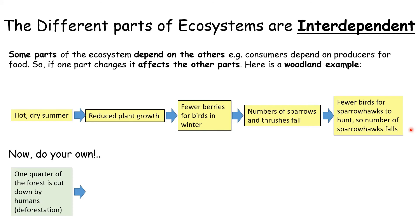If you'd like to have a go: let's imagine one quarter of a forest is cut down by humans because they want to use the wood. See if you can show how the different parts of the forest would depend upon each other — so this might lead to there being fewer birds, which might lead to there being fewer animals within the forest.